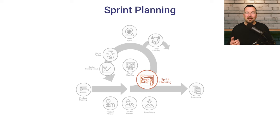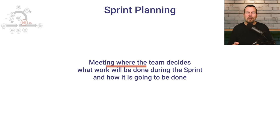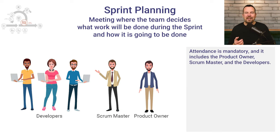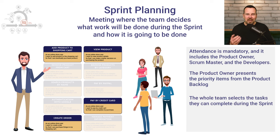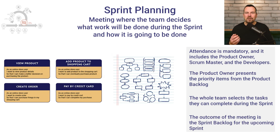The first event in the Sprint is Sprint Planning. Each Sprint starts with Sprint Planning, a meeting where the team decides what work will be done during the Sprint and how it is going to be done. Attendance is mandatory and includes the Product Owner, Scrum Master, and the Development Team. The Product Owner presents the highest priority items from the Product Backlog. The team then discusses and selects the user stories they can complete during the Sprint, forming the Sprint Backlog. The outcome is a clear plan and scope of work for the upcoming Sprint with defined goals and tasks.